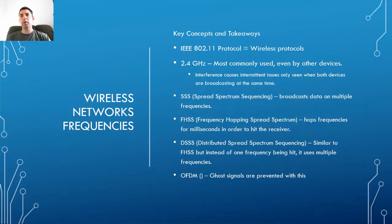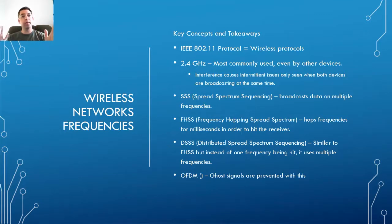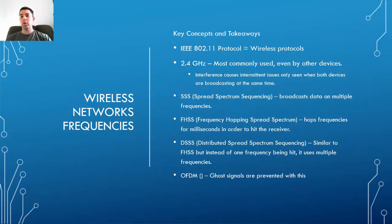OFDM helps prevent ghost signals. Ghost signals occur when an AP sends out a signal and it bounces off walls or other objects, reflecting back to the receiver as a second signal — kind of like an echo in a canyon. This can confuse the receiver with multiple echoes. OFDM prevents that: it identifies the strongest signal as the intended one and ignores all the echoes.